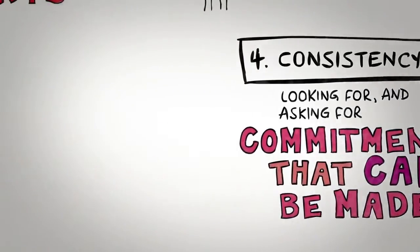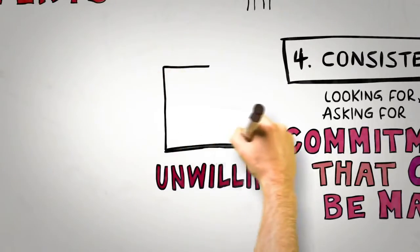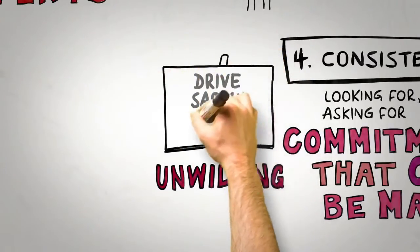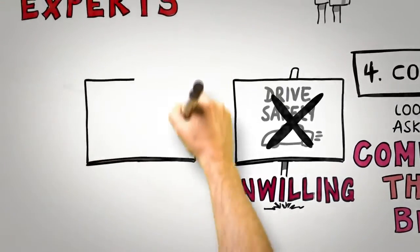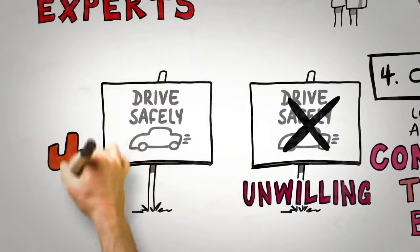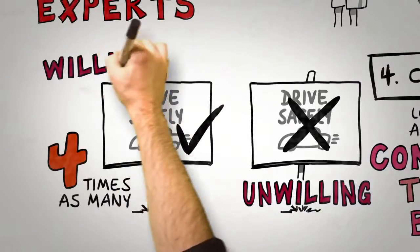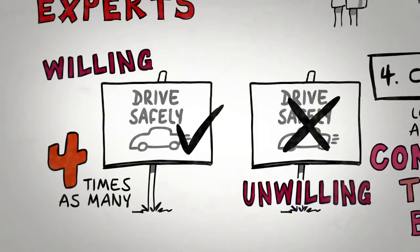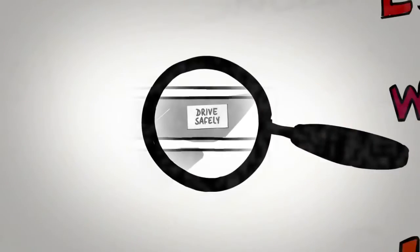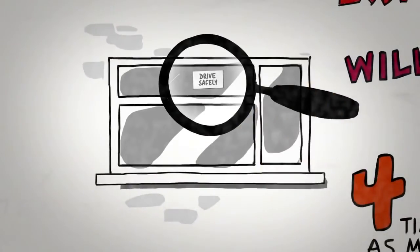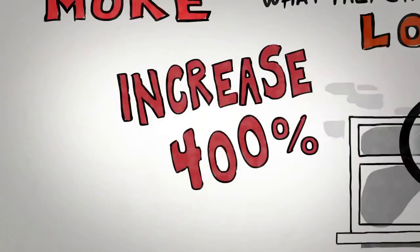In one famous set of studies, researchers found, rather unsurprisingly, that very few people would be willing to erect an unsightly wooden board on their front lawn to support a drive safely campaign in their neighborhood. However, in a similar neighborhood close by, four times as many homeowners indicated that they would be willing to erect this unsightly billboard. Why? Because 10 days previously, they had agreed to place a small postcard in the front window of their home that signaled their support for a drive safely campaign. That small card was the initial commitment that led to a 400% increase in a much bigger but still consistent change.